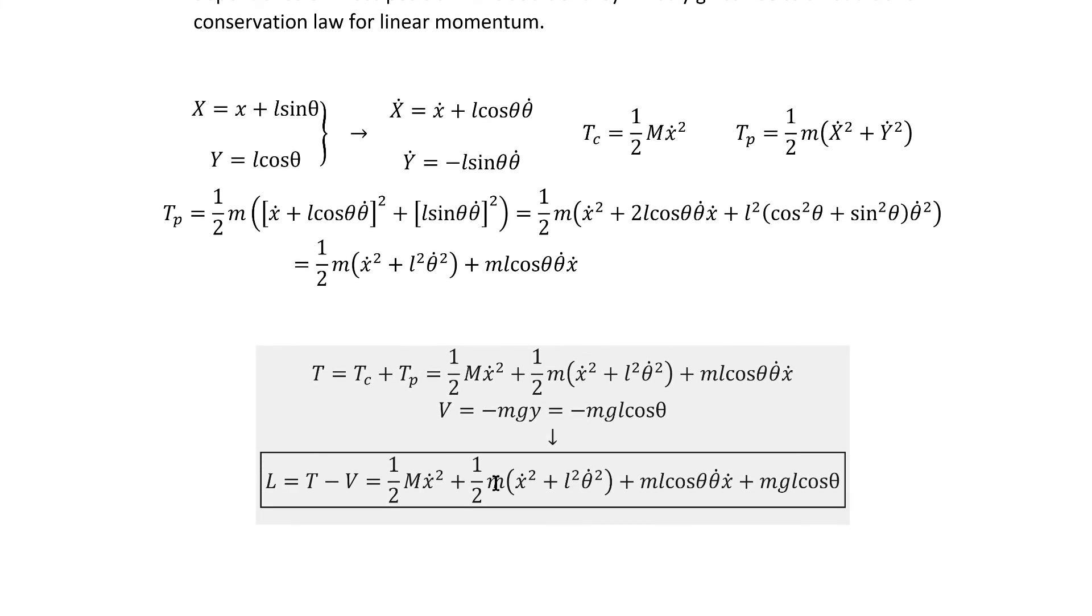Then if we take T minus V, we get the Lagrangian we're looking for, which is this right here.